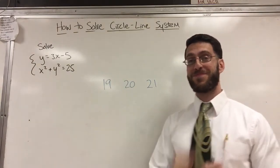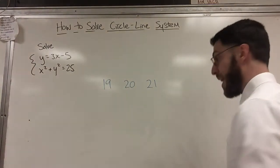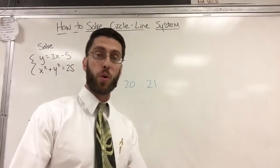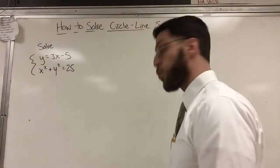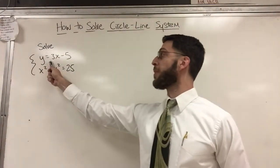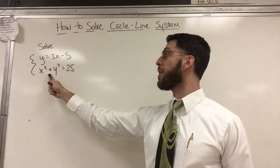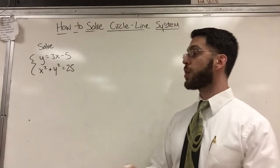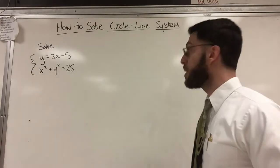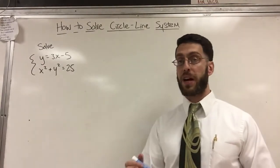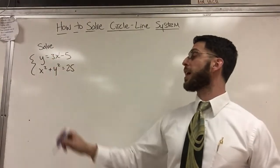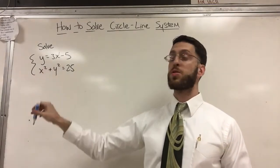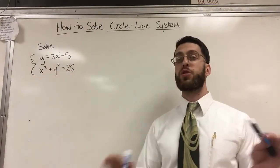Alright, back to the real lesson at hand. Take a look at this system right here, where a system is more than one equation at the same time. You've got to be able to recognize that this is a linear equation and this is an equation of a circle. A linear equation has the highest exponent of x equal to one, and a quadratic equation is when the highest exponent of x is two. So this is going to lead us to a quadratic.